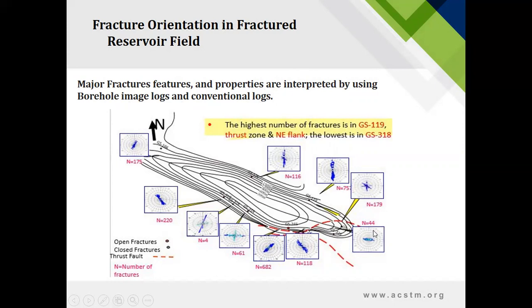You can see here changing from northwest, southeast, and northeast, and southwest. You can see the change. And also, you can see the change of fracture density, which is higher in this part and lowest in this part. Highest in GS119 and lowest in GS318.